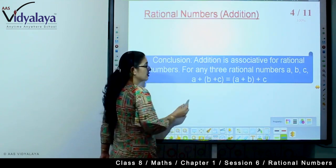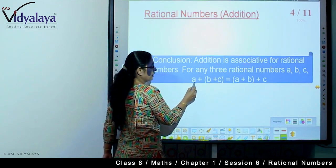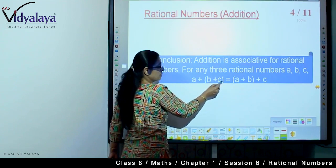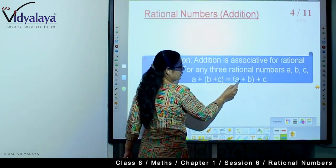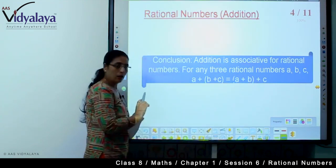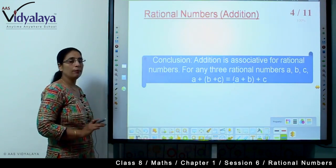So for any 3 rational numbers like A, B, C, either we can write A plus bracket B plus C, or we can write bracket A plus B plus C. We will always get the same answer.